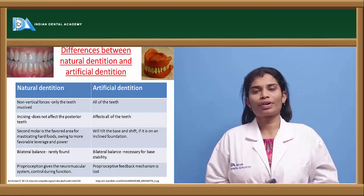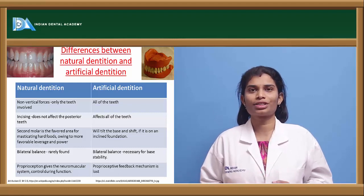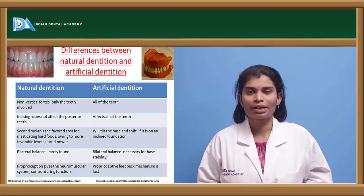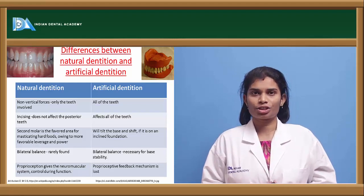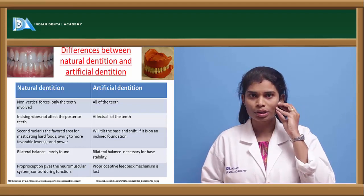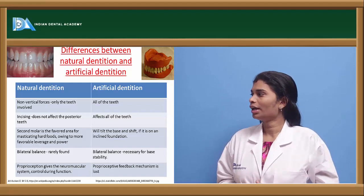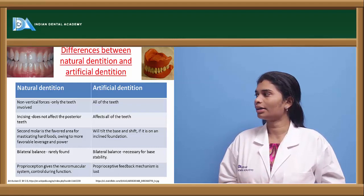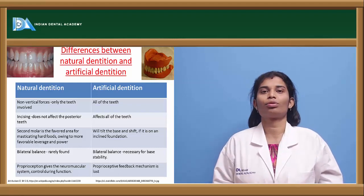The second molar is the most favorable region in natural teeth for grinding, because that region is very close to the axis of rotation, so forces will be more and biting efficiency will be greater. But in artificial dentition, if you concentrate the whole biting force on the same tooth, the denture might slip or get dislodged. Never act single-sidedly.